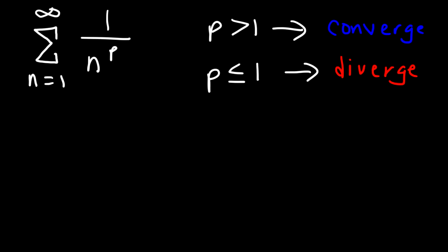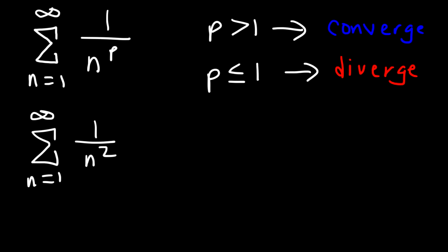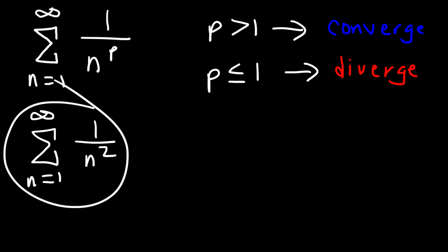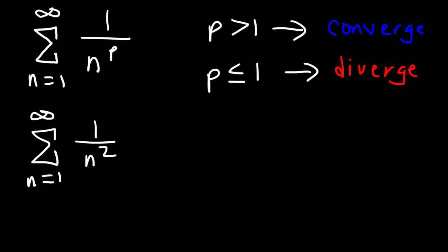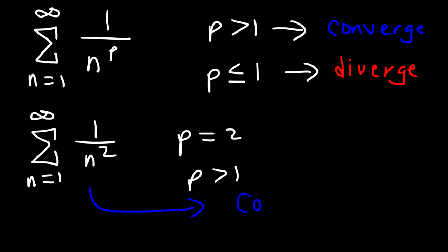Now let's try some other examples. So let's say that a sub n is 1 over n squared. So for this particular series, will it converge or diverge? We can clearly see that p is equal to 2, which means that p is greater than 1, and so the series converges.